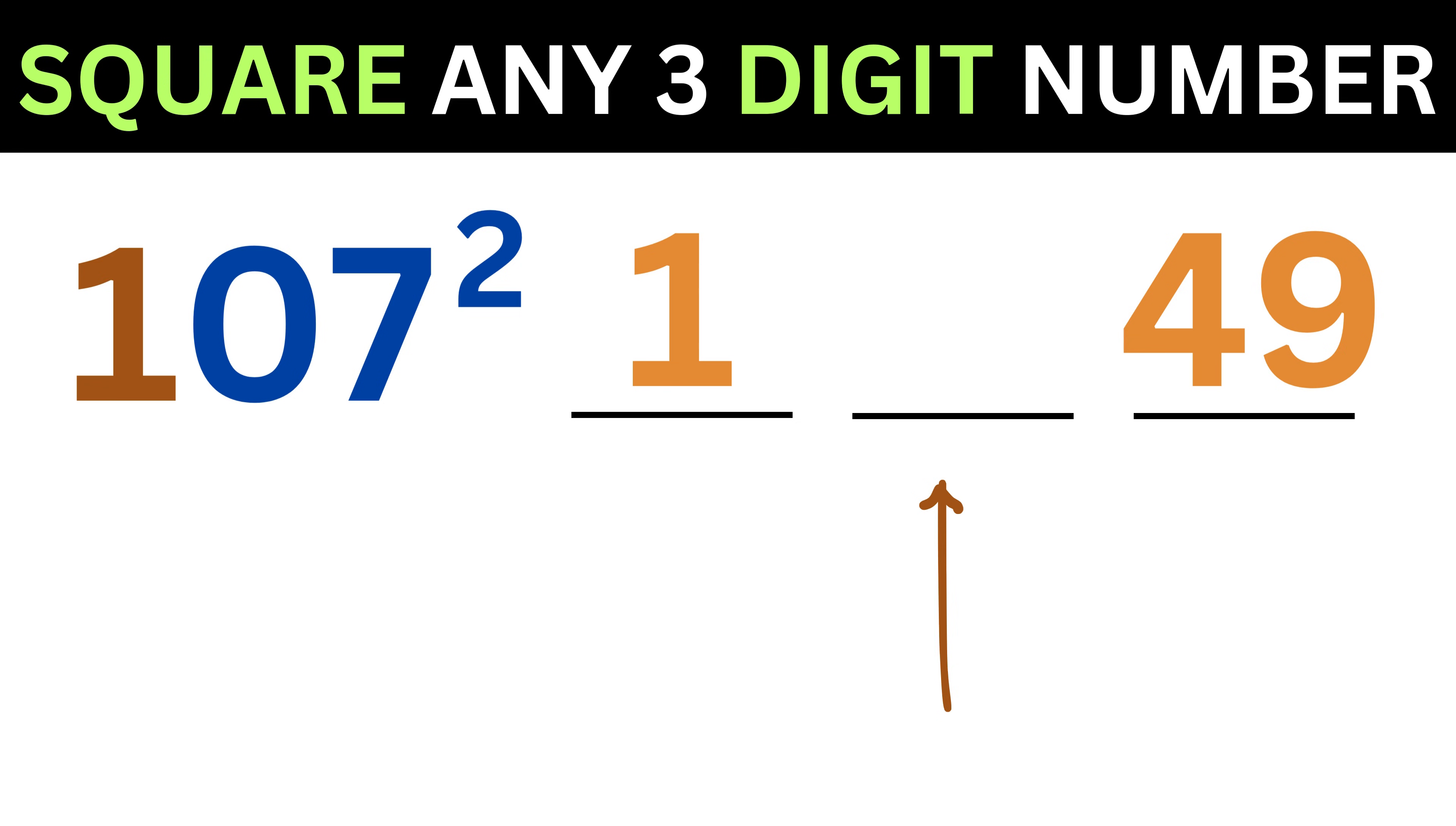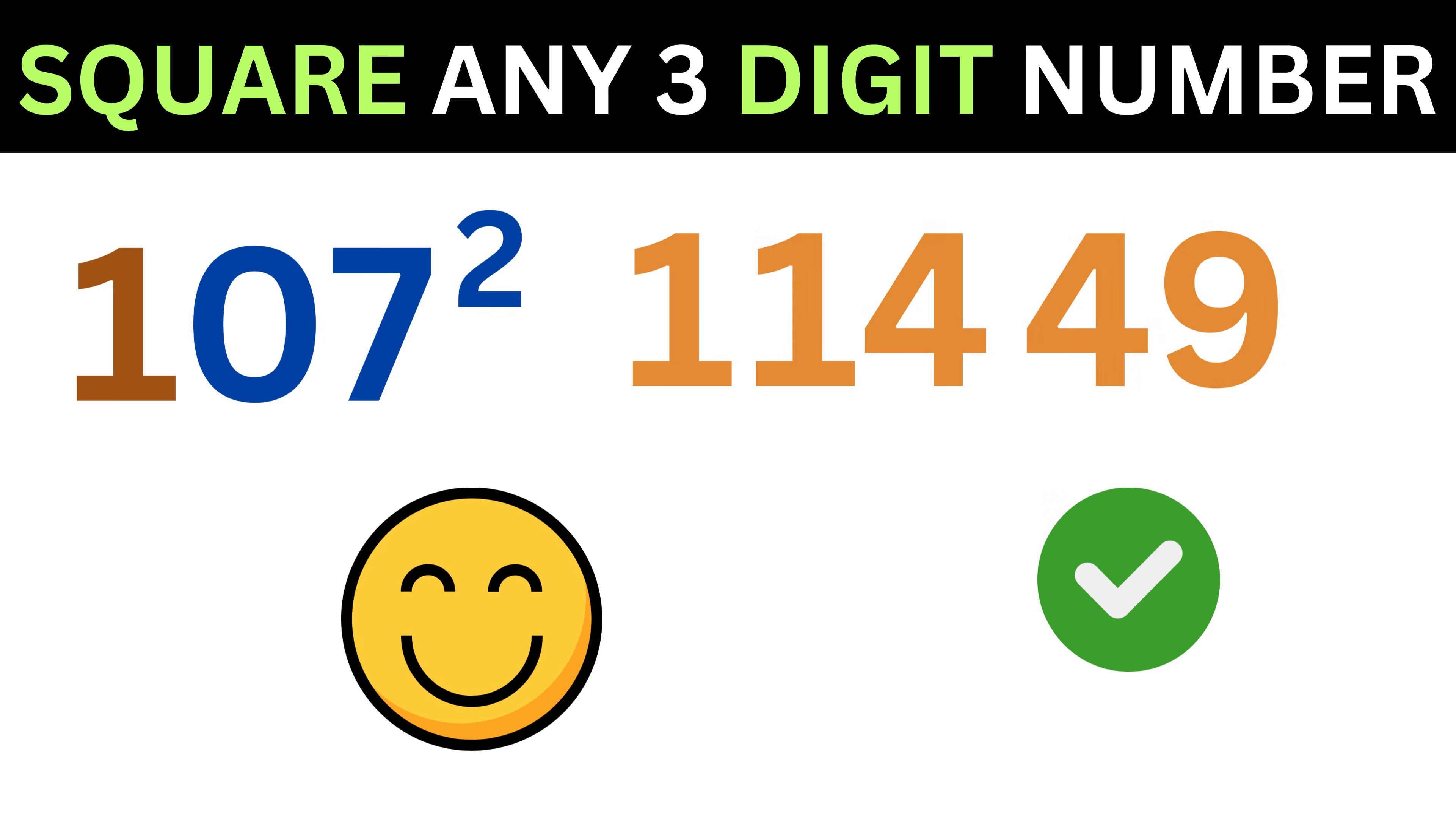Now consider the middle part. Take this 1, and then take this 7, and then multiply both of them with 2 to get 1 times 7 times 2, or 14. So put it here, and that's it. Our final answer is 11449. That was lightning fast.